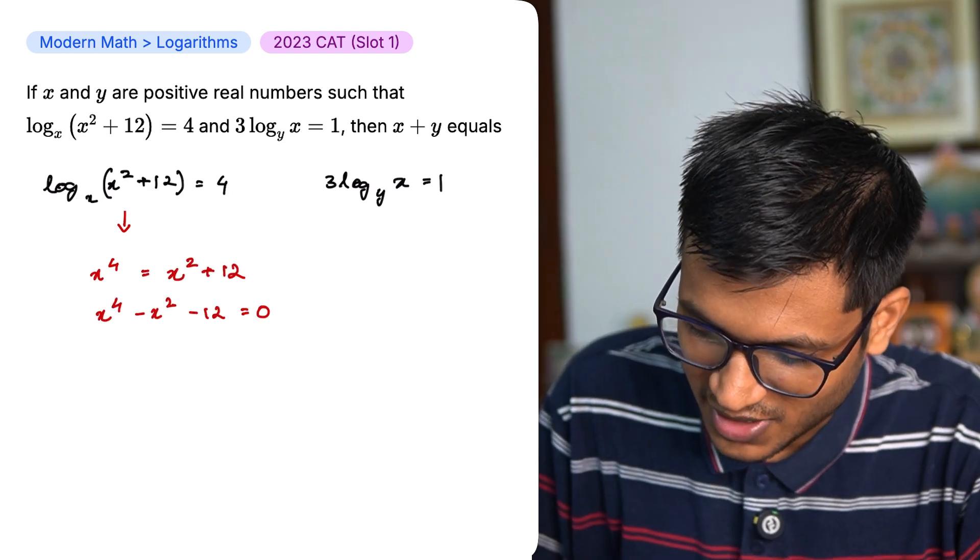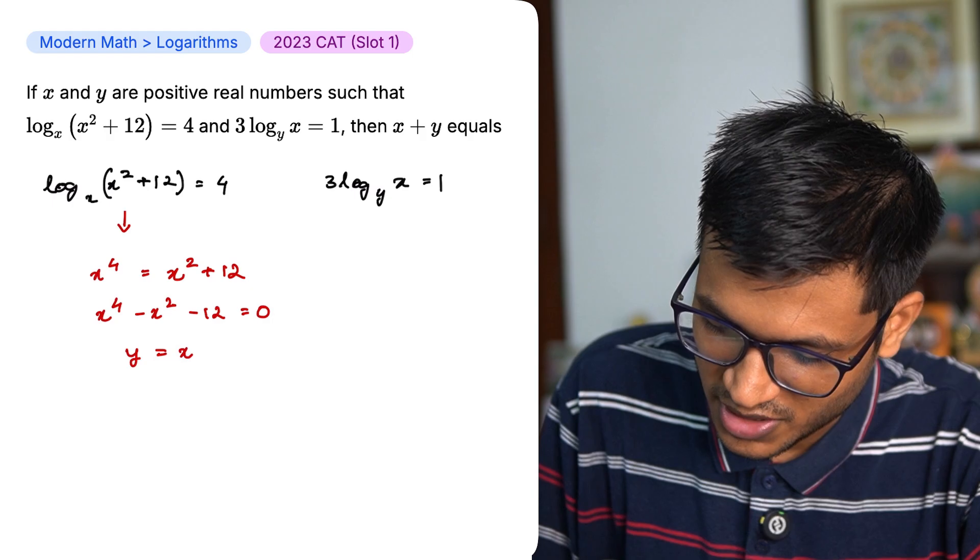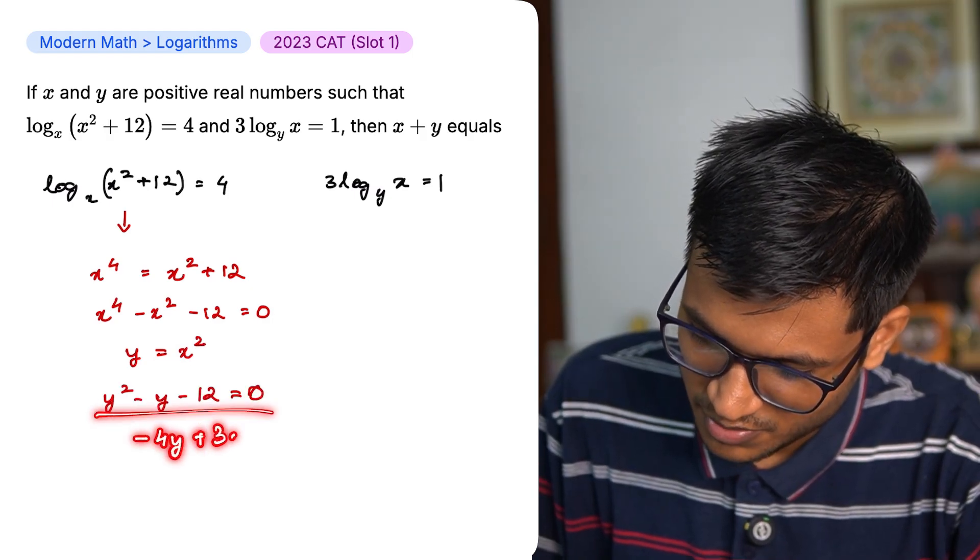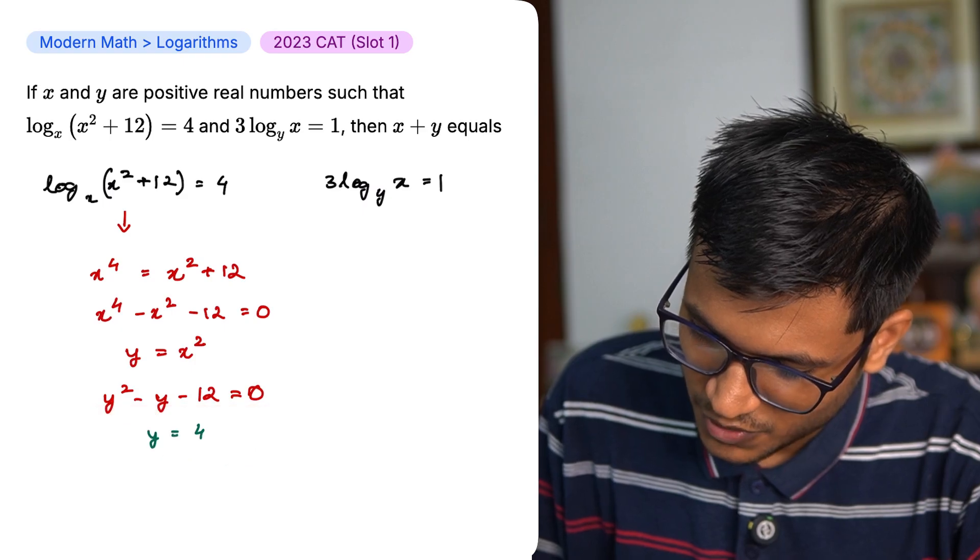This states that x to the power 4 equals x square plus 12. Rearrange it. This looks like a quadratic equation. Let me put y equal to x square. If I split the middle term, I get minus 4y and plus 3y.